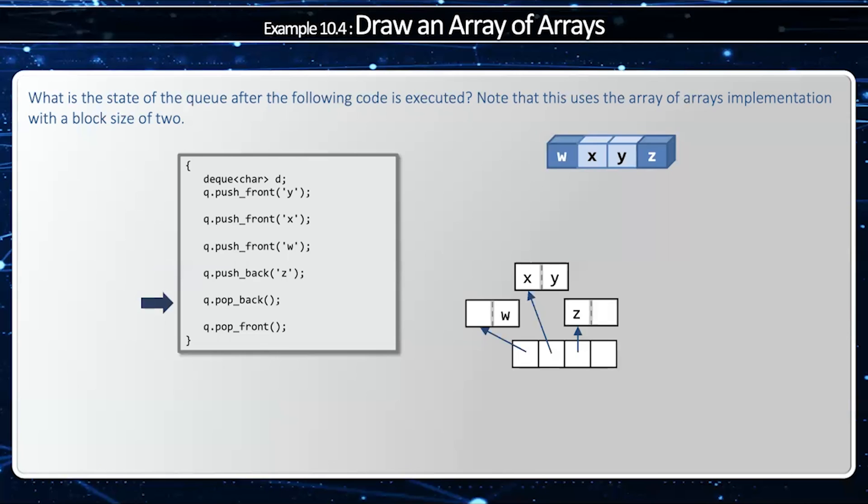Now, when I pop back, well, that's z, and when I pop back, that will remove the entire block. And then when I pop front, that will remove the whole block of w. So when I'm finished here, then block 0 is not allocated. Block 1 has two cells, x and y.